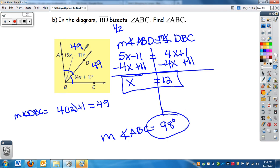Again, you can check it. If you went 5 times 12, which is 60, minus 11 is 49. So I know this is the correct answer. It's always nice to know when you're right.